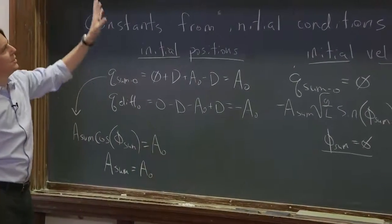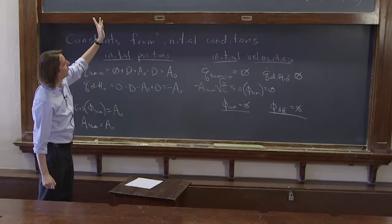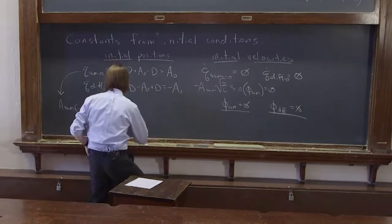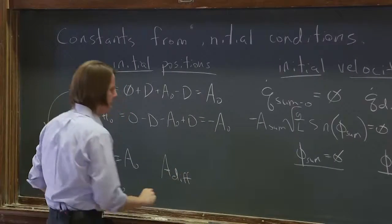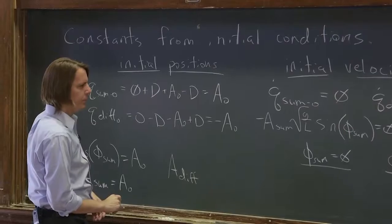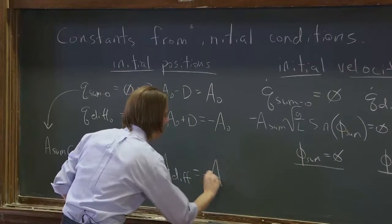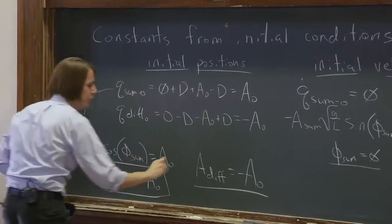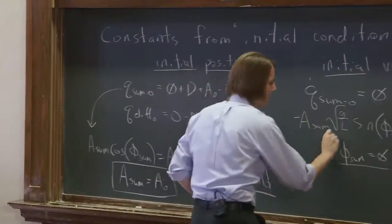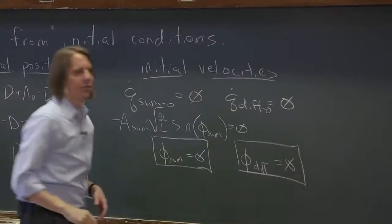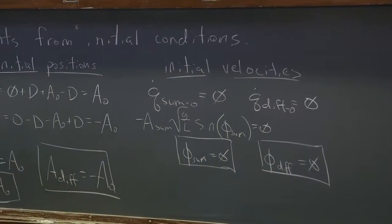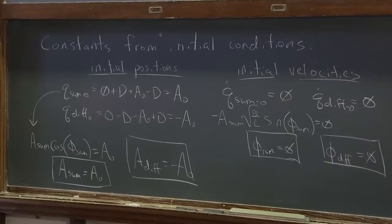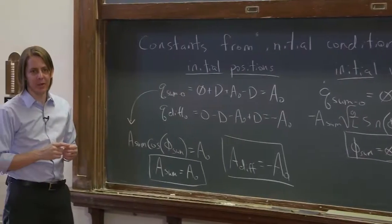The exact same argument for q_diff: the phase is 0, time is 0, so A_diff equals minus A_0. There is the solution to the free parameters for simple harmonic motion. We've solved them with our initial conditions. So we now know exactly how the normal modes move. But we want to know how the actual masses move in real space, so we'll do that next.